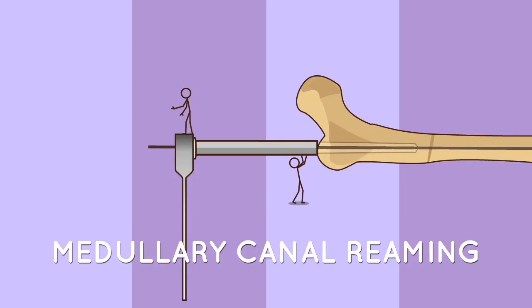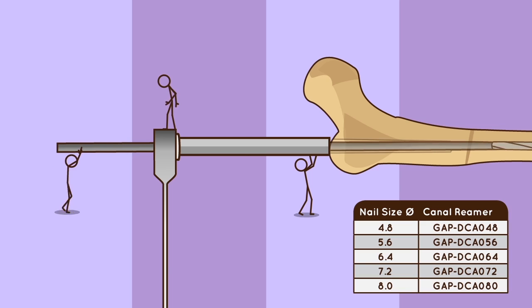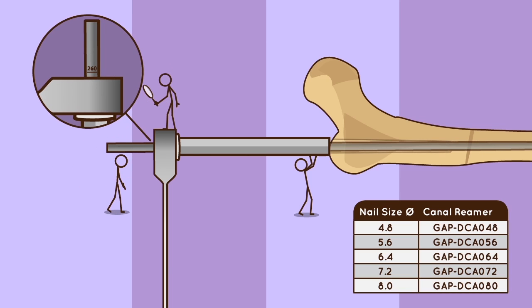Medullary canal reaming: select the canal reamer corresponding to the selected nail size. Ream through the tissue protector and over the guide wire. Advance the reamer with steady and moderate pressure. Ream until the depth marking corresponding to the selected nail is reached.